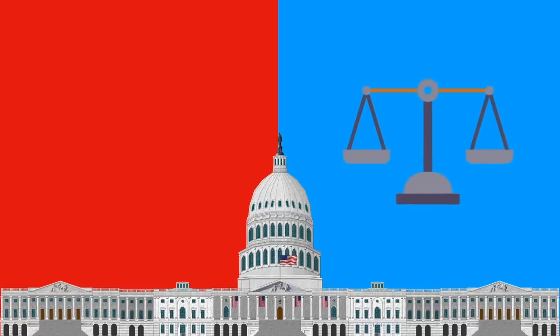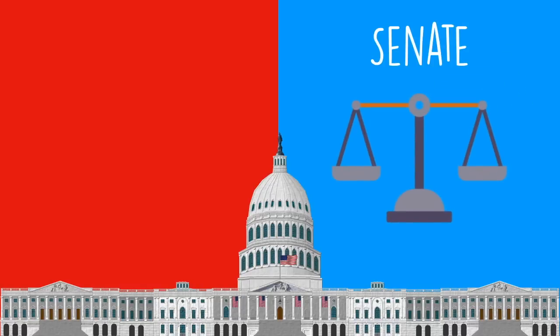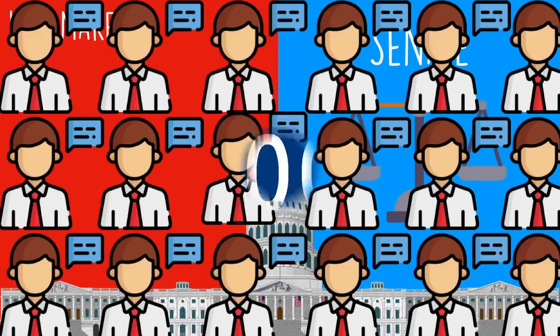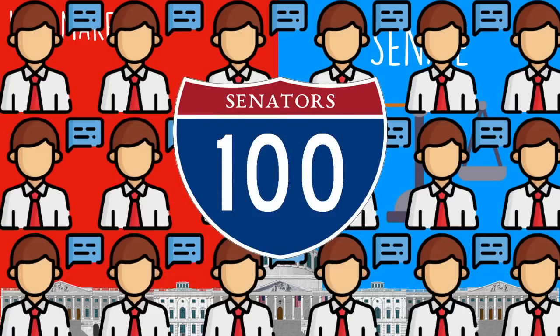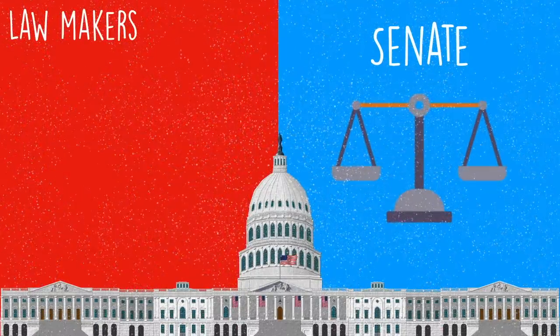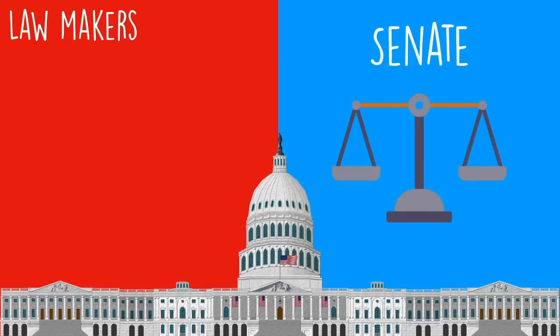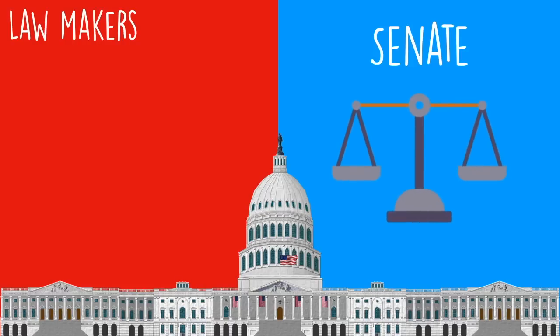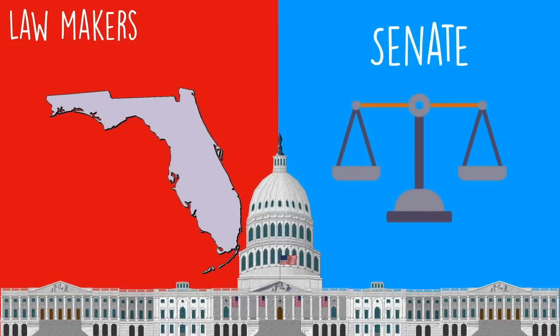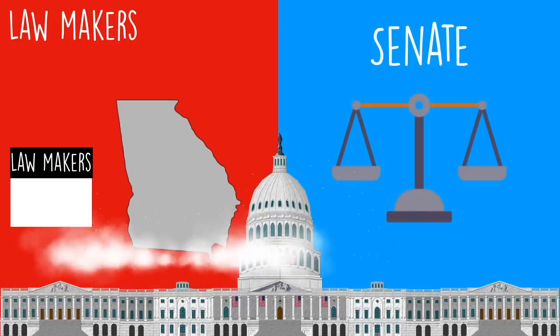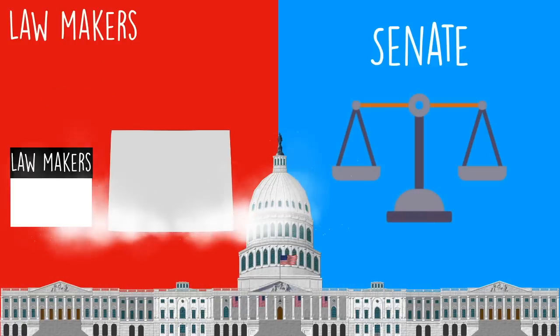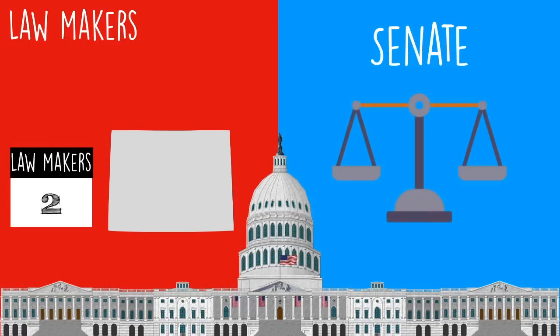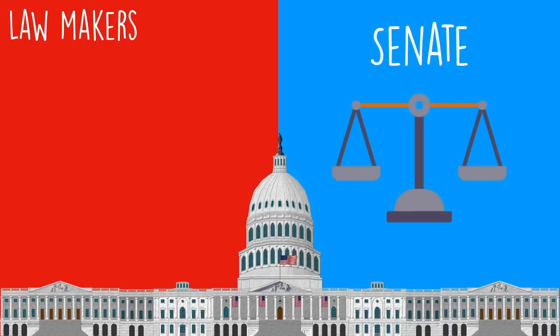That was the House of Representatives in a quick nutshell, but bicameralism means there's another chamber — the Senate. In the Senate there are 100 lawmakers, and we call this equal representation, meaning there are two lawmakers in the Senate for every state. Doesn't matter how many people live in that state, everyone gets the same. Florida has two senators, Georgia has two senators, and Wyoming has two senators. The Senate is designed to give states with smaller populations equal representation.